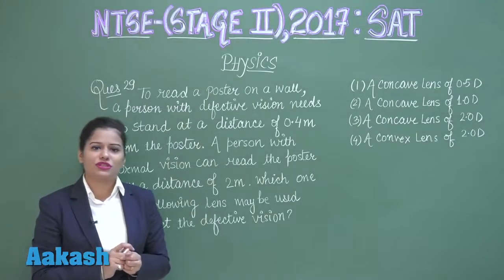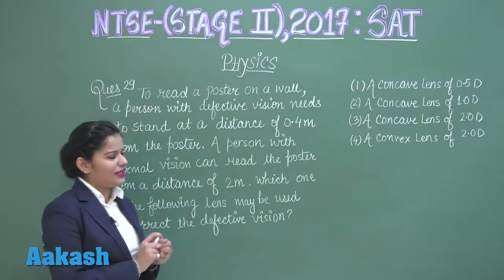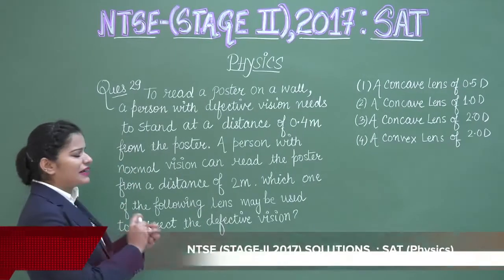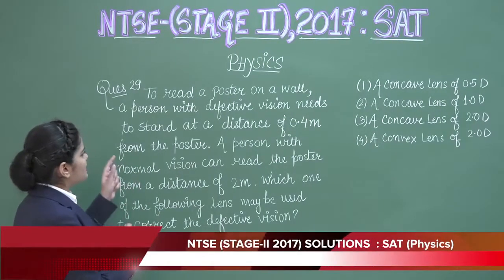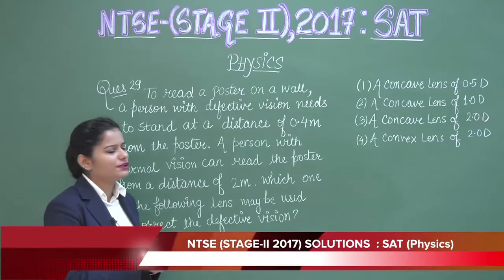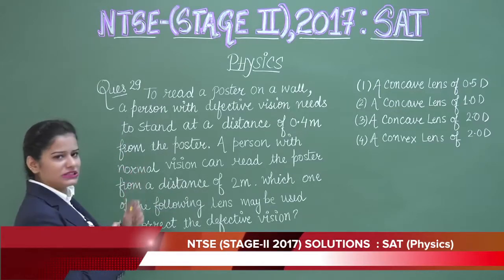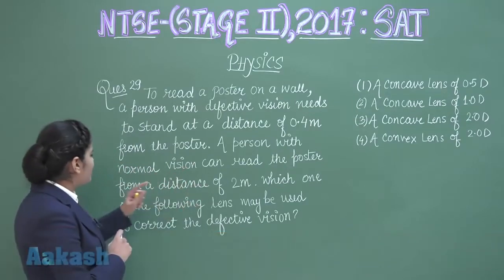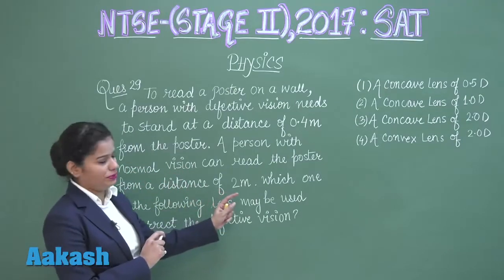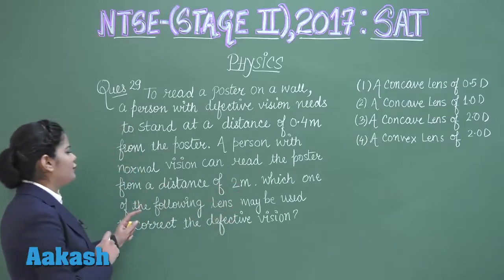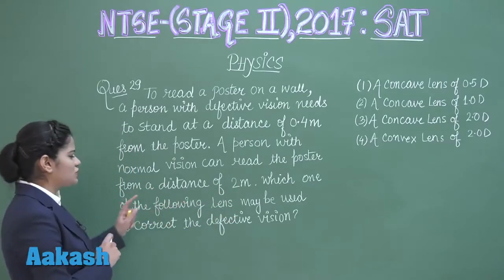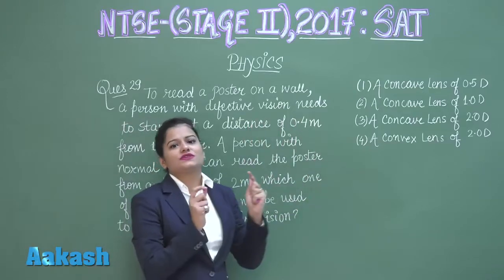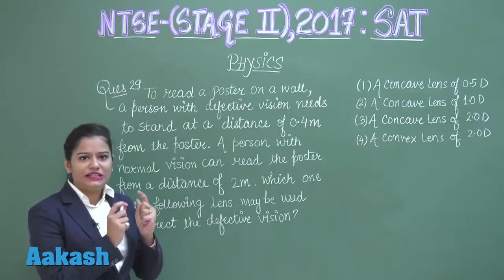Now it's time to solve question number 29. Let's have a look — to read a poster on a wall, a person with defective vision needs to stand at a distance of 0.4 meter from the poster, while a person with normal vision can read the poster from a distance of 2 meters. Which one of the following lenses must be used to correct the defective vision?